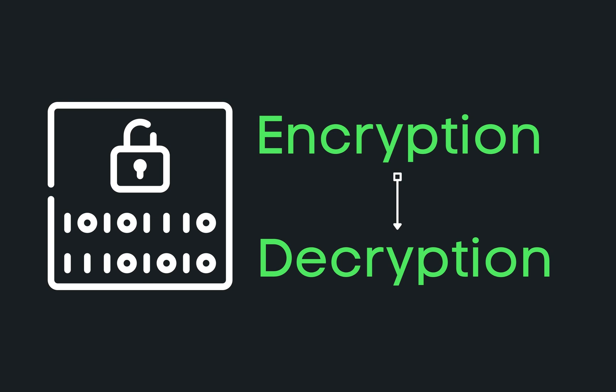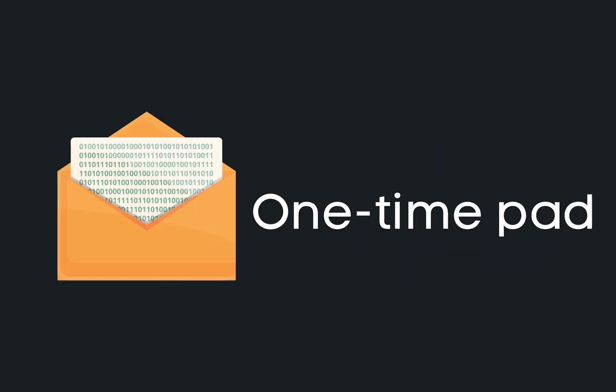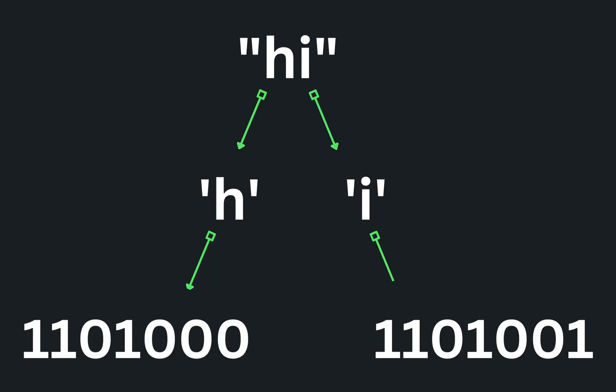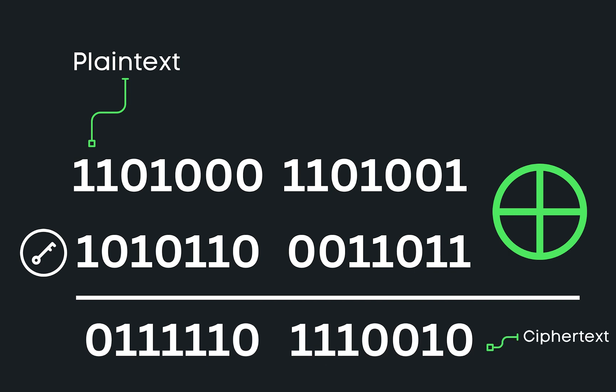Using this single, inexpensive operation, we can both encrypt and decrypt a message. Let me show an encryption operation known as a one-time pad. Let's say we have some message we want to encrypt. In cryptography, this is called plaintext. We can represent this message in binary. If we generate a random key equal to the size of the binary message, we can XOR the two to produce an encrypted message, called a ciphertext.